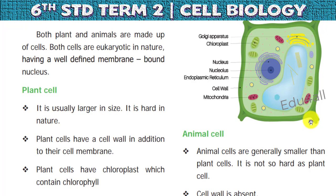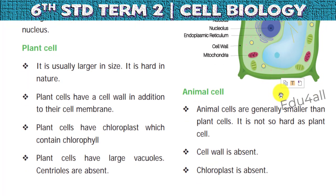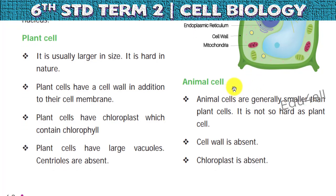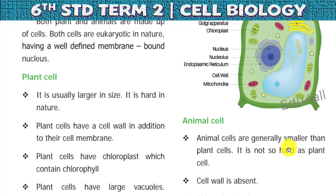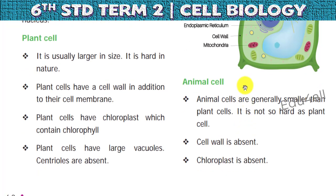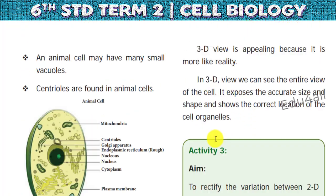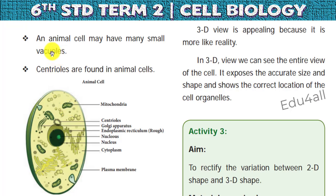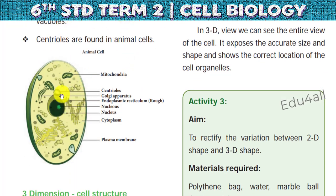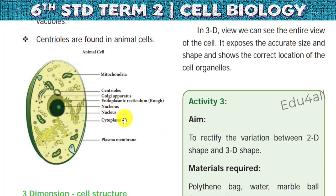My dear students, just draw and practice the plant cell structure. It is a very important question for all parts of exams. Next is animal cell. Animal cells are generally smaller than plant cells. They are not rigid because they don't possess a cell wall — cell wall is absent. Chloroplast is also absent, so animal cells cannot produce their own food. Animal cells have very small vacuoles. They possess centrioles, which are cell organelles present only in animal cells. Chloroplast is present only in plant cells.